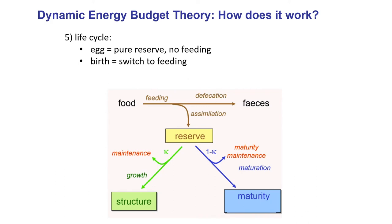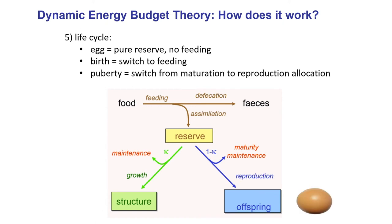The point of birth is simply when the organism starts feeding — at a certain threshold level of maturation. Once that threshold is hit, the model changes to allow feeding, the whole feeding apparatus starts, and reserve is topped up by food. The second switch is puberty, where the maturation process ceases. That maturation level is maintained, but any profits above maintenance go into a reproduction buffer — a build-up of another pool of reserve. Once there's enough reserve to make an egg, it's dispensed into the environment.